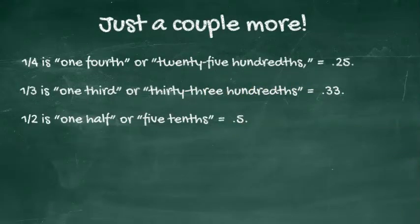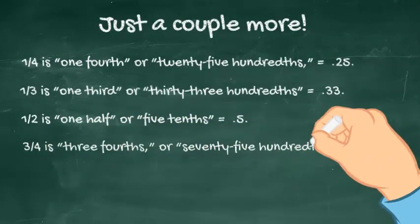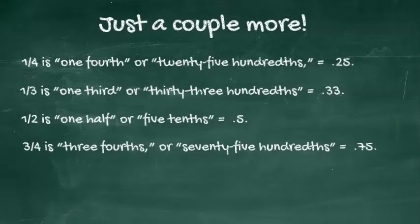3 over 4 is 3 fourths, or 75 hundredths, expressed as a decimal it's 0.75.